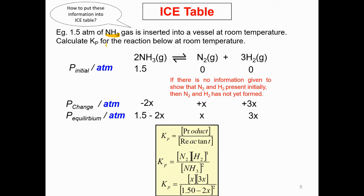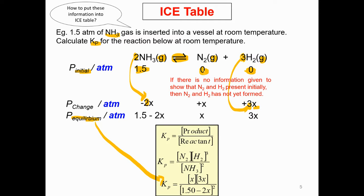The next example involves ammonia gas and asks to calculate Kp. Write down the reversible reaction with phase labels. The initial pressure of ammonia is 1.5. During change, look at the stoichiometric coefficients — hydrogen gas is produced and increases by three times. If there is no information given to show that nitrogen gas and hydrogen gas are present initially, they are not formed yet, so we put 0.